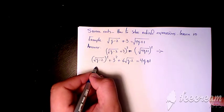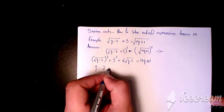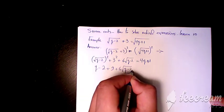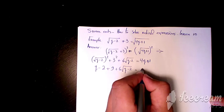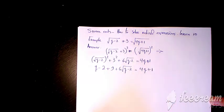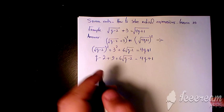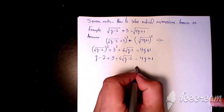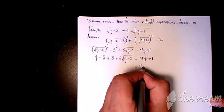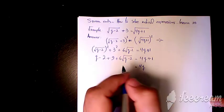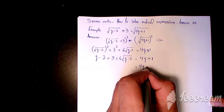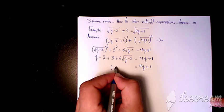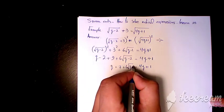The two and square root cancel each other, so it's going to be q minus 2, plus 9, plus 6 times root of (q minus 2), equals 2 times (4q plus 1). Then if you simplify it, you have 4q plus 1 on the right, and q plus 7 plus 6 root of (q minus 2) on the left.